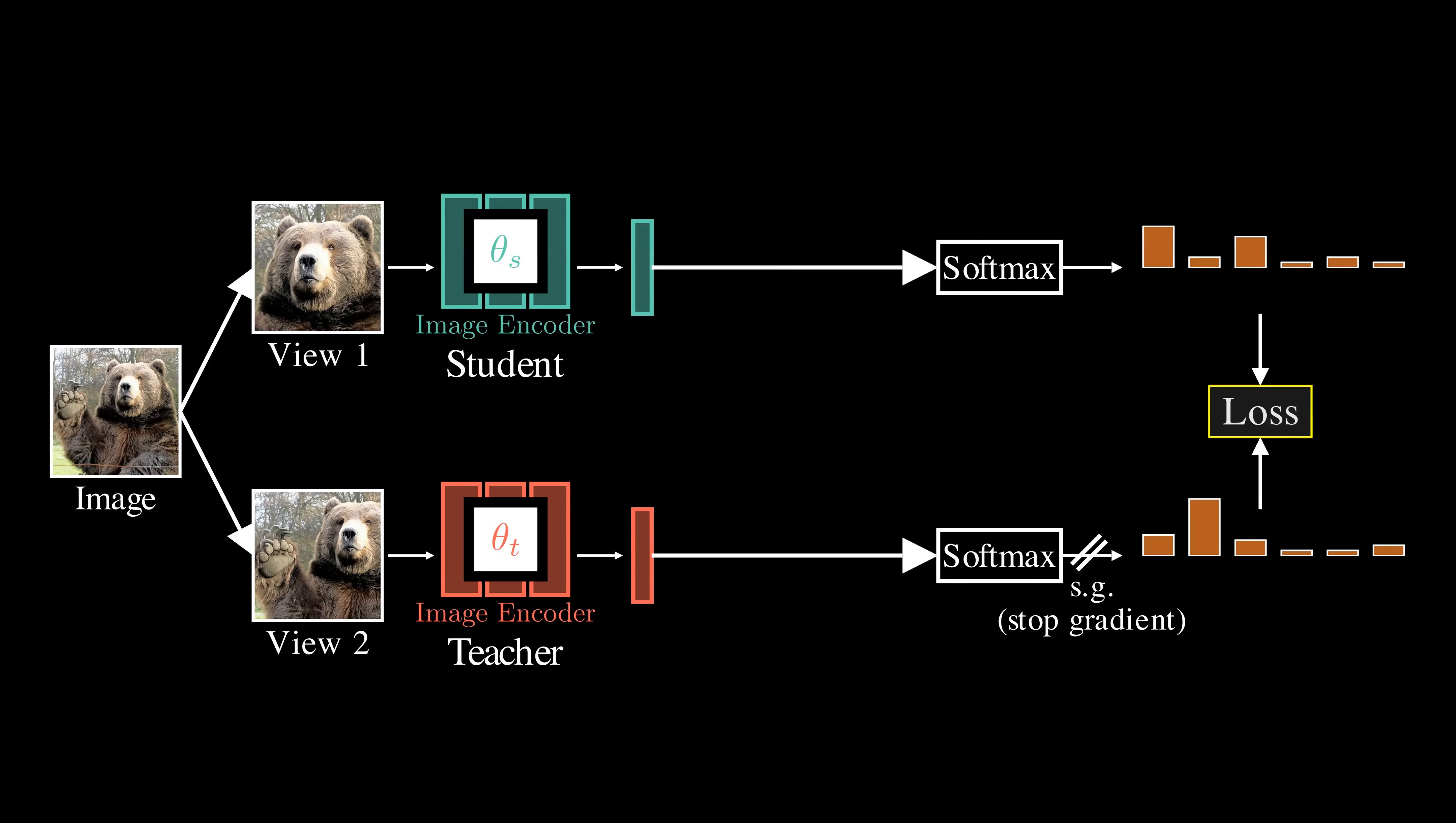But there are some problems. First, if we don't have labels from people, how do we know what a class is? Fortunately, we can define the output dimension to be a large number like 65,000. This enables the model to discover and represent a wide range of visual concepts without requiring us to define them in advance.